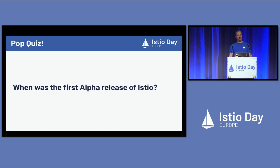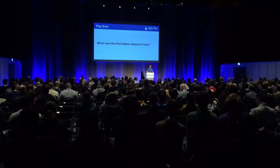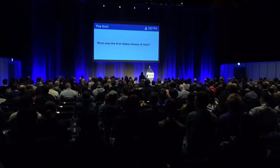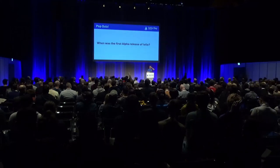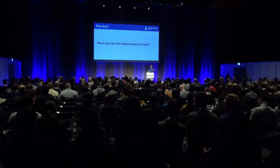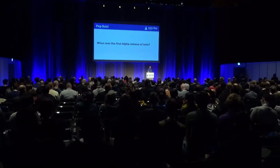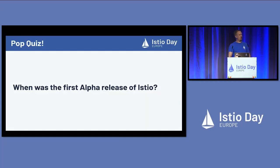When was the first alpha release of Istio? Anybody been with us for that long? You can Google if you want. We have a taker — 2017 is correct. And the month? I'm hearing May. May is correct — TOC members are not allowed. May 10th, 2017 was our first alpha release in the Istio project.